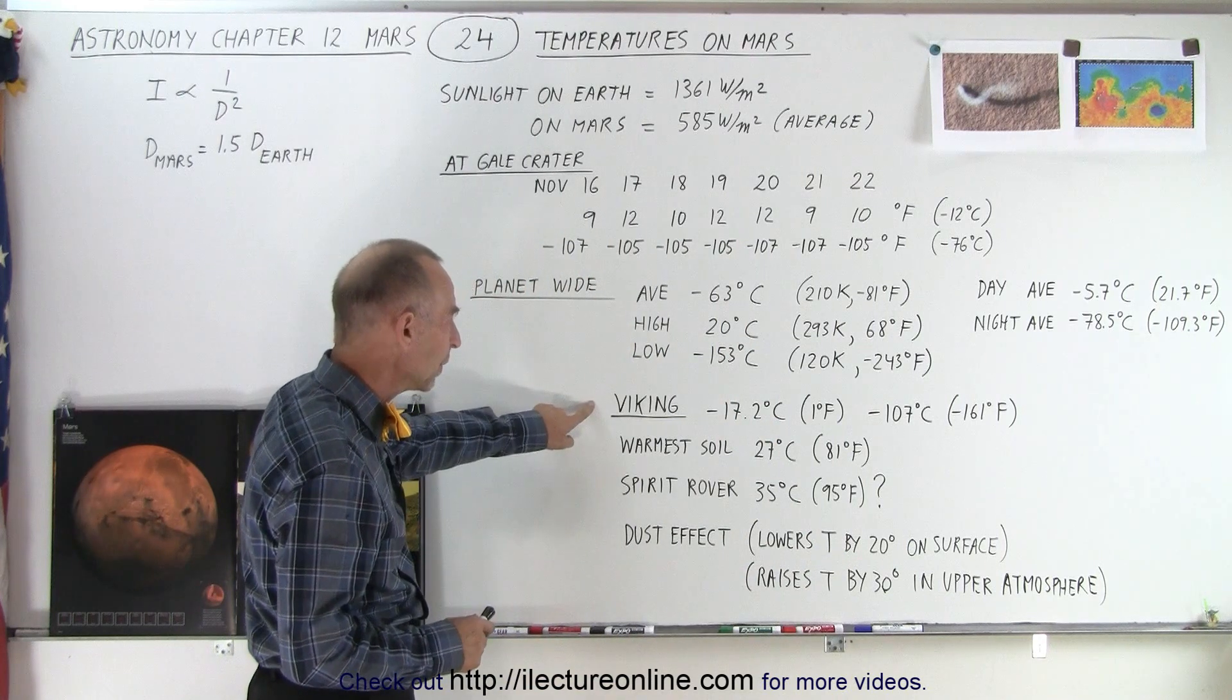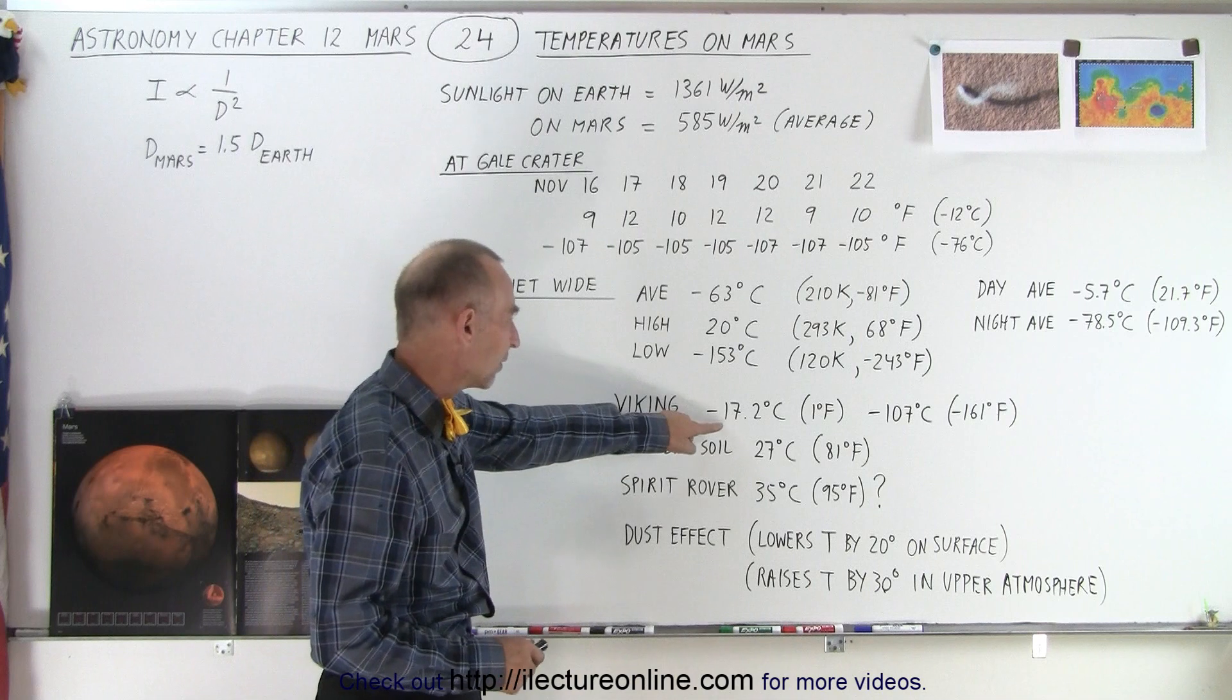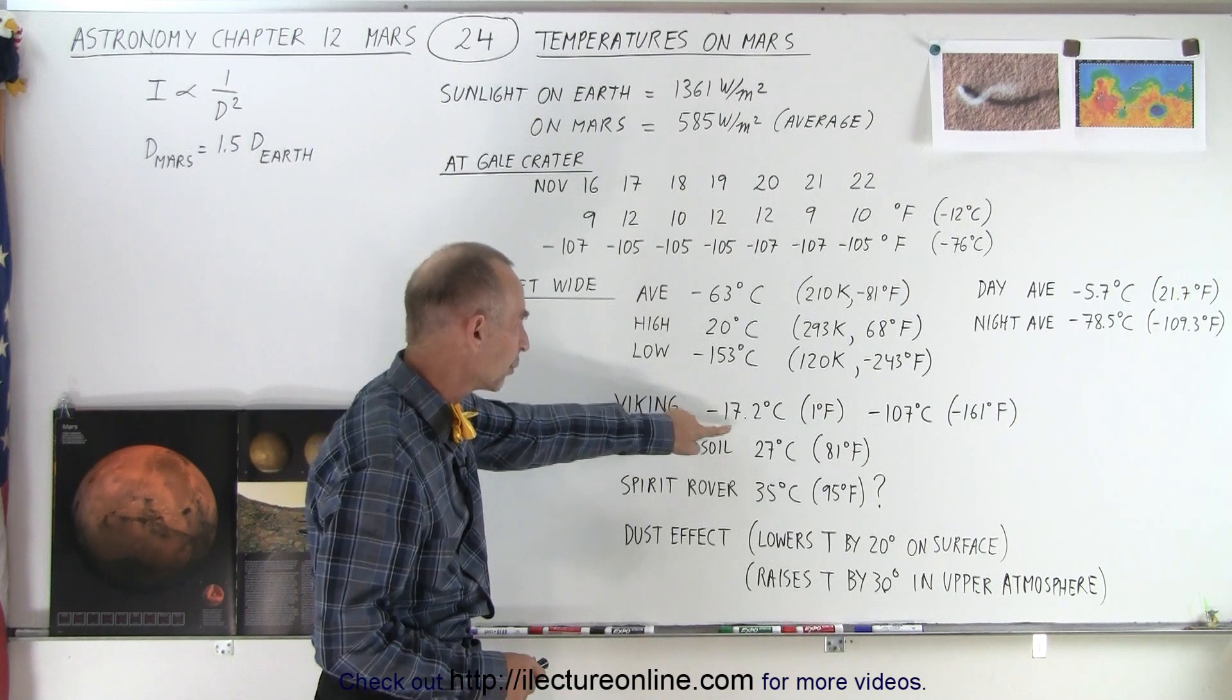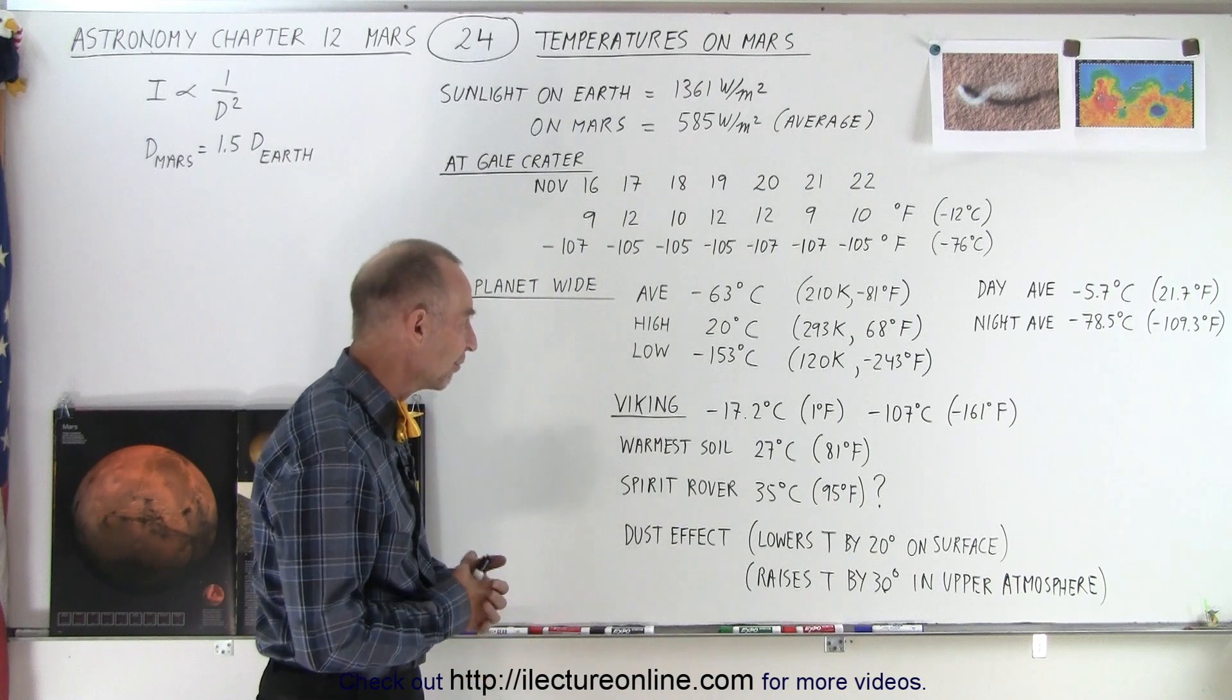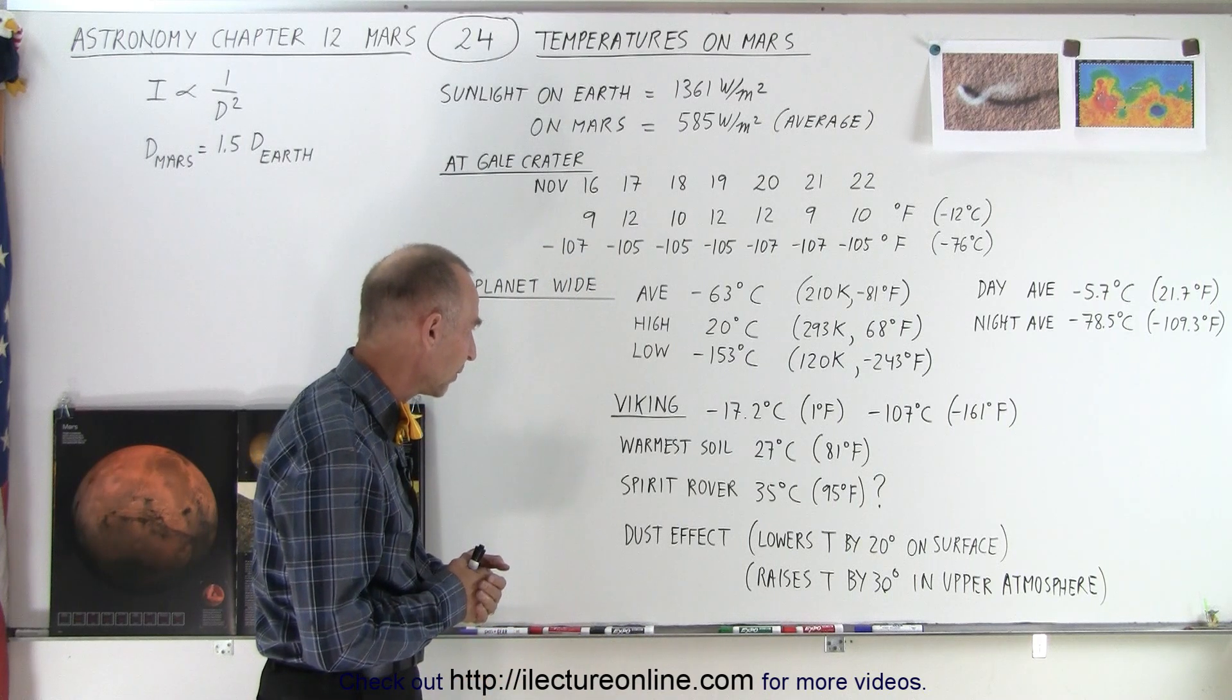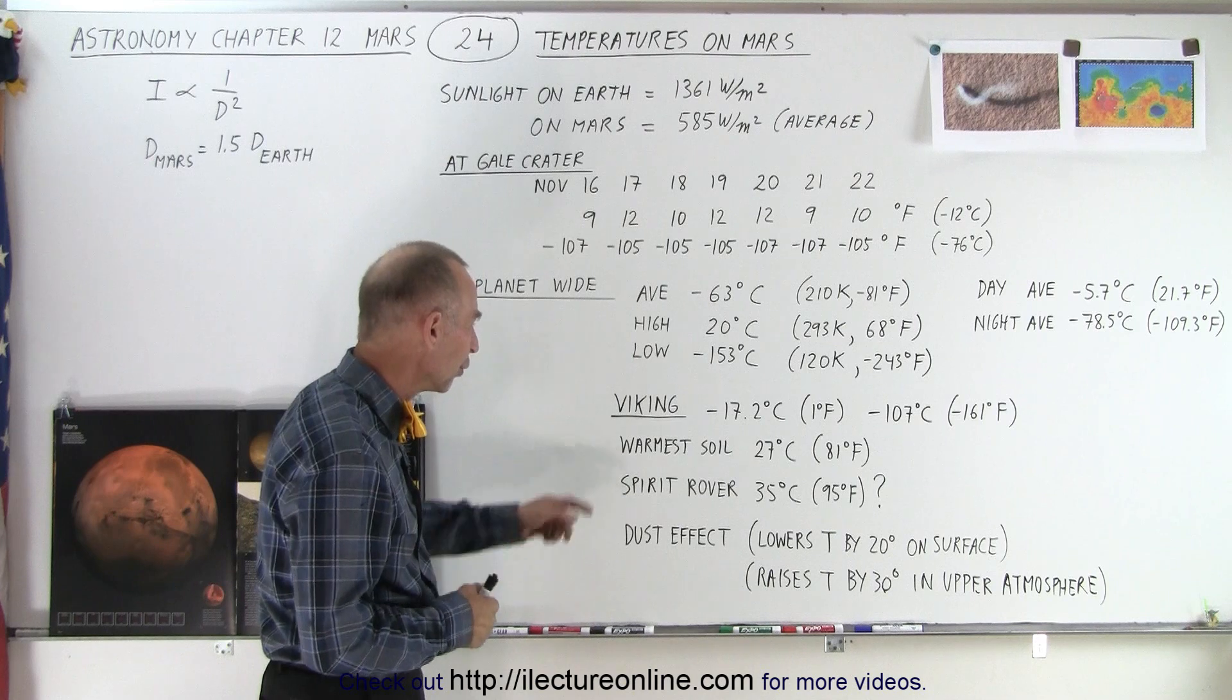On the Viking lander we took some temperatures, and we had daytime temperatures of minus 17.2 centigrade and minus 107 at night. So you can see some very, very frigid temperatures were recorded there by the Viking spacecraft.